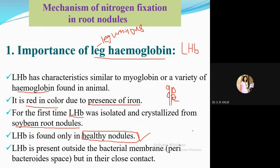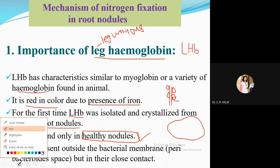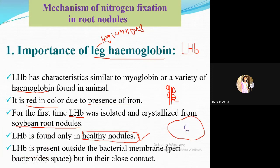LHb is given by the plant and is present outside the bacterial membrane in what is called the peribacteroid space — the space present at the periphery of the bacterial membrane — in close contact with the bacteria.